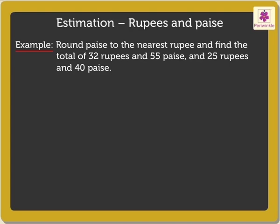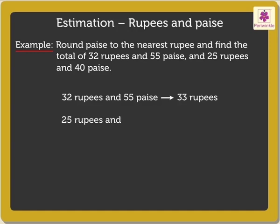Here, 32 rupees and 55 paise is approximately 33 rupees, as the paise are more than 50. Next, 25 rupees and 40 paise is approximately 25 rupees, as the paise are less than 49.